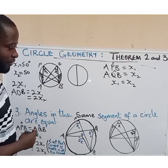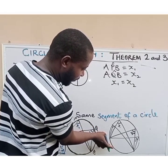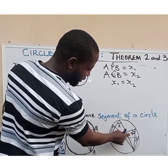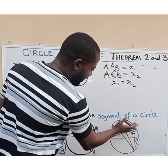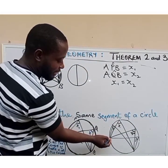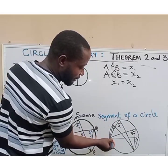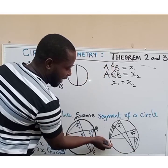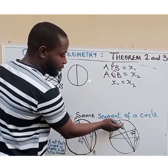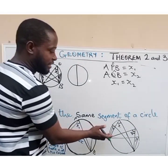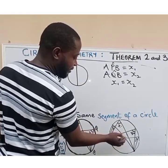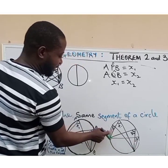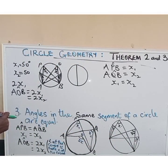For example, if we have angle x, then 45 degrees, then y, and then z — all these are angles in the same segment because their starting points are from the same arc. This arc connects them all. So definitely x will be 45 degrees, y will be 45 degrees, and z will also be 45 degrees.